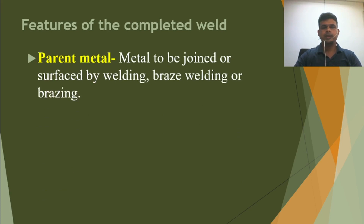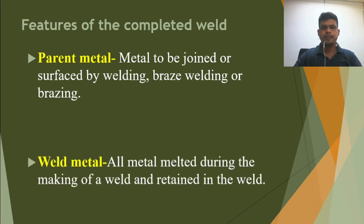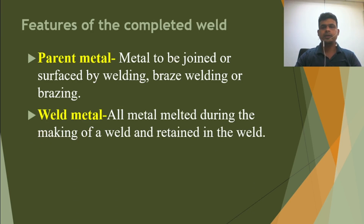What is the parent metal? The parent metal is the metal to be joined or surfaced by welding, brazing, or braze welding. For welding we need metal to weld — if we have two metals, then only we can do welding, brazing, or soldering. These two metals we have in hand are called the parent metal. The weld metal is the metal melted during the making of a weld and retained in the weld, using filler rod, electrode, or filler metal.